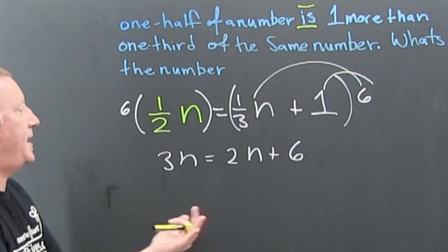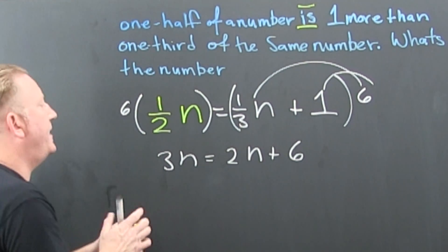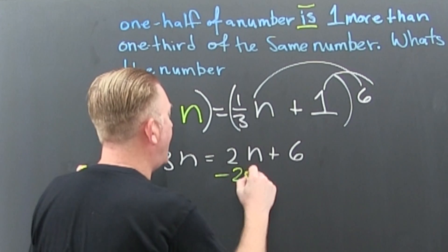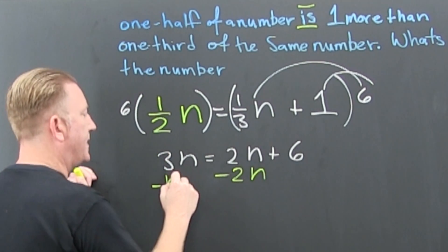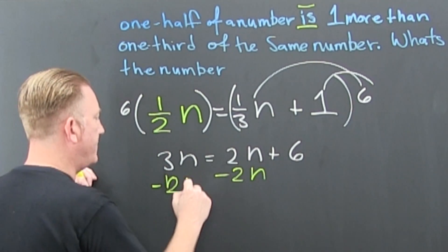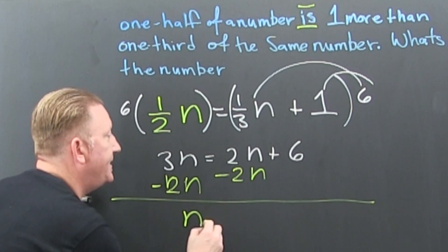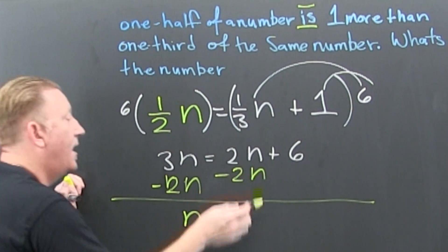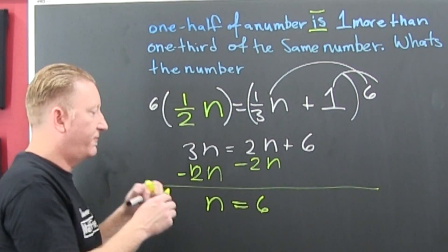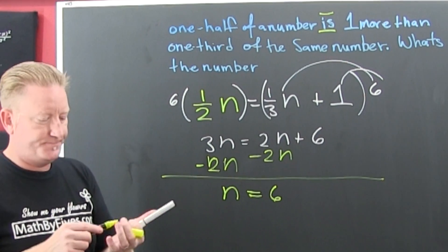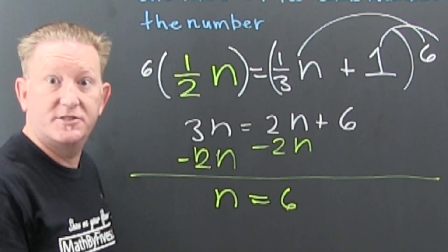Now I go and back that math up. I want to get all my N's on one side. This is N here and on the other side I got 6. So what's the number? Six!